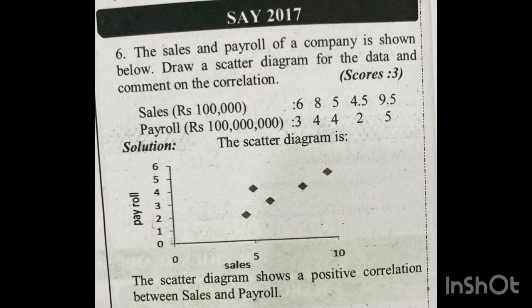Two of the other methods are Karl Pearson's correlation coefficient and Spearman's correlation coefficient. Scatter diagram is much easier — there is no calculation. Just plot the x values and y values on the graph and look at the trend to see positive, negative, or no correlation.